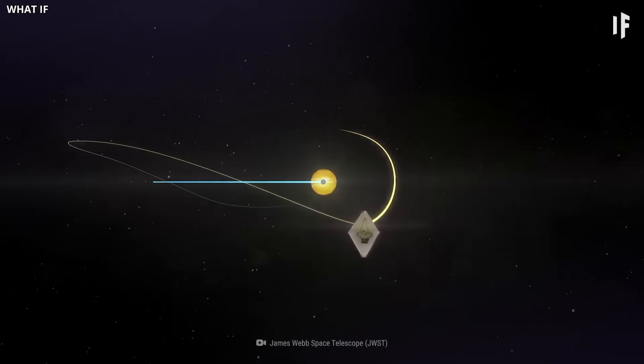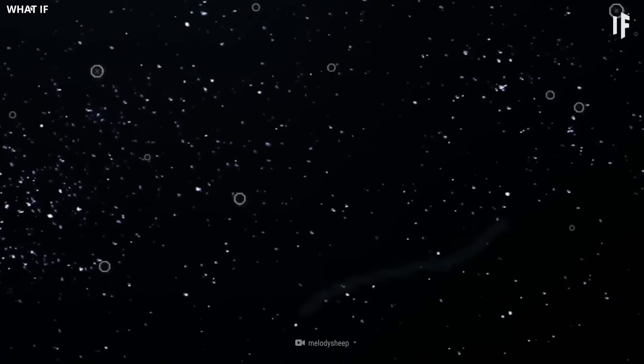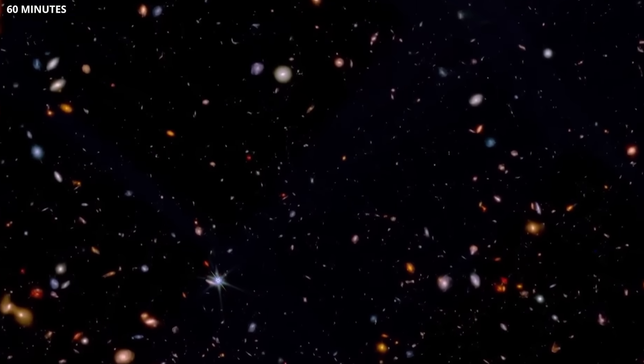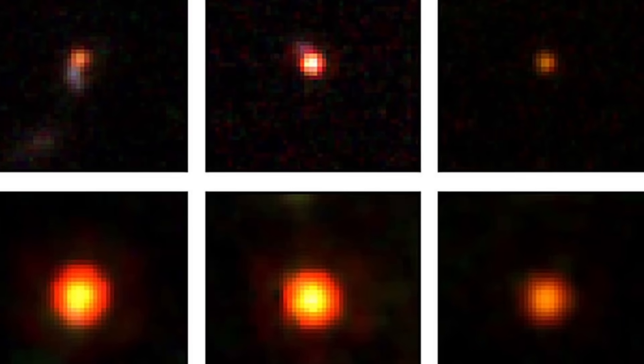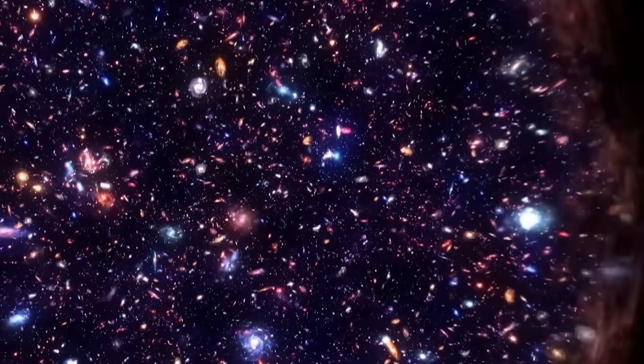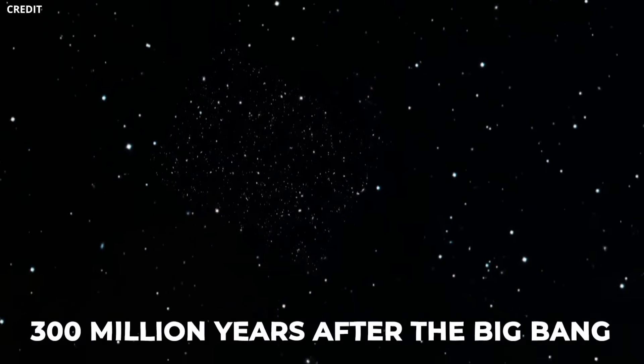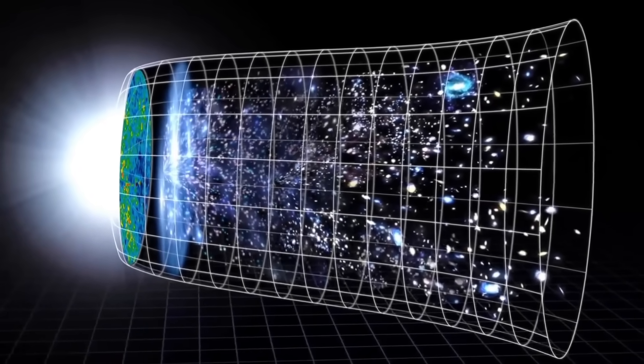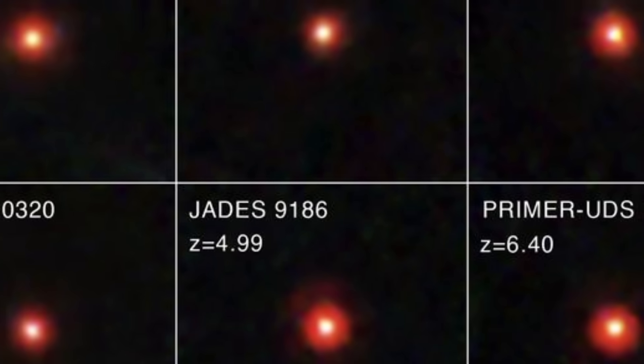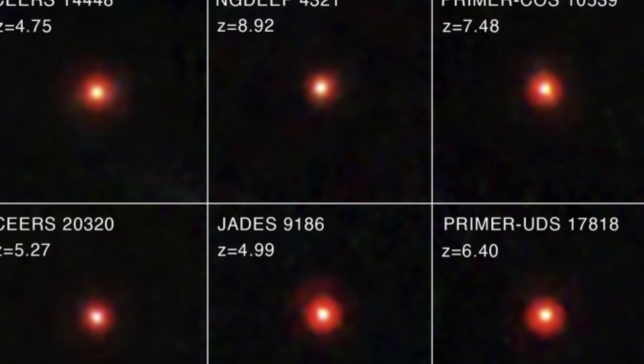As Webb Telescope continued its observations, things got even more puzzling. It began finding even more distant and mysterious objects. What's more troubling is that some of these objects are so luminous and large that scientists aren't even sure what they are. Are they galaxies? Supermassive black holes? Something else entirely? Whatever they are, they don't fit into any of our current theories. These objects appear to have existed as early as 300 million years after the Big Bang, or even sooner. The biggest problem is that our standard models of the universe don't predict this. According to those models, there simply shouldn't have been enough time for so many large, bright structures to form.